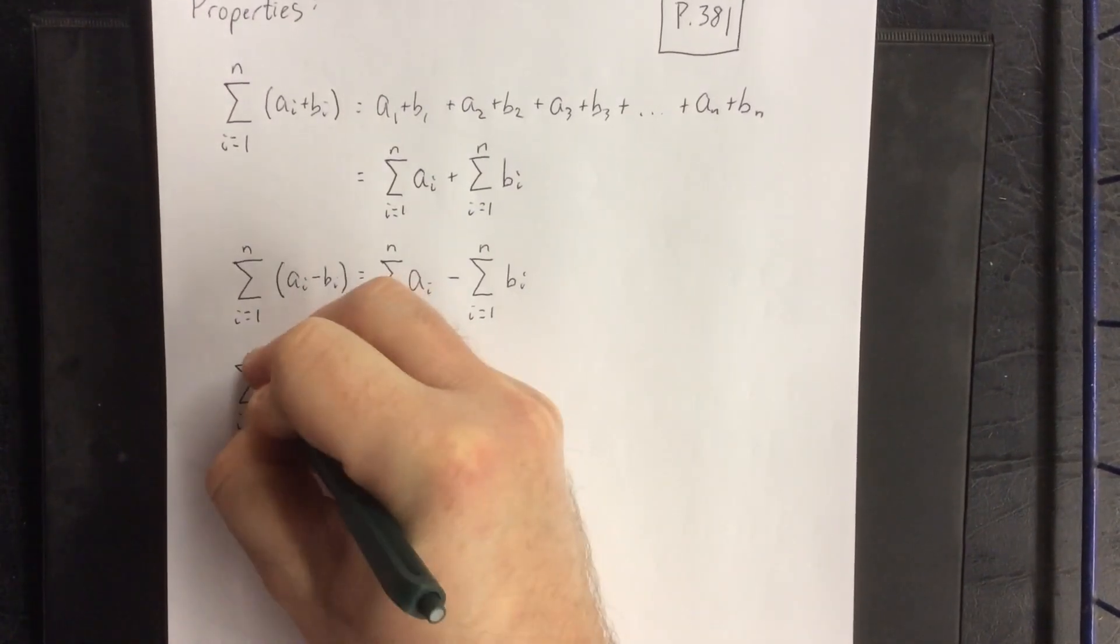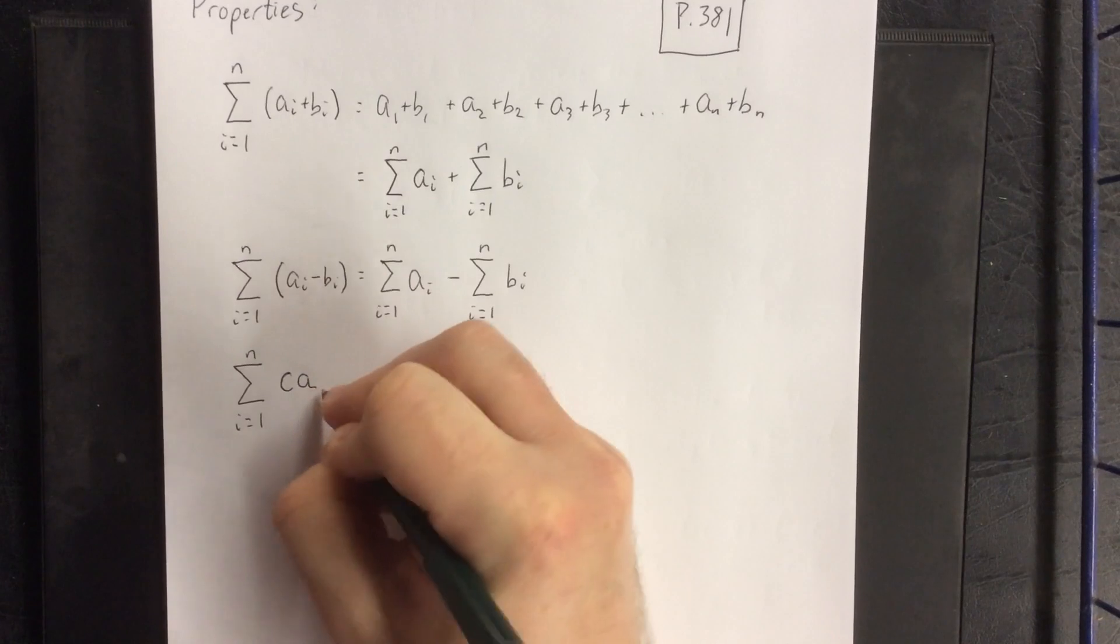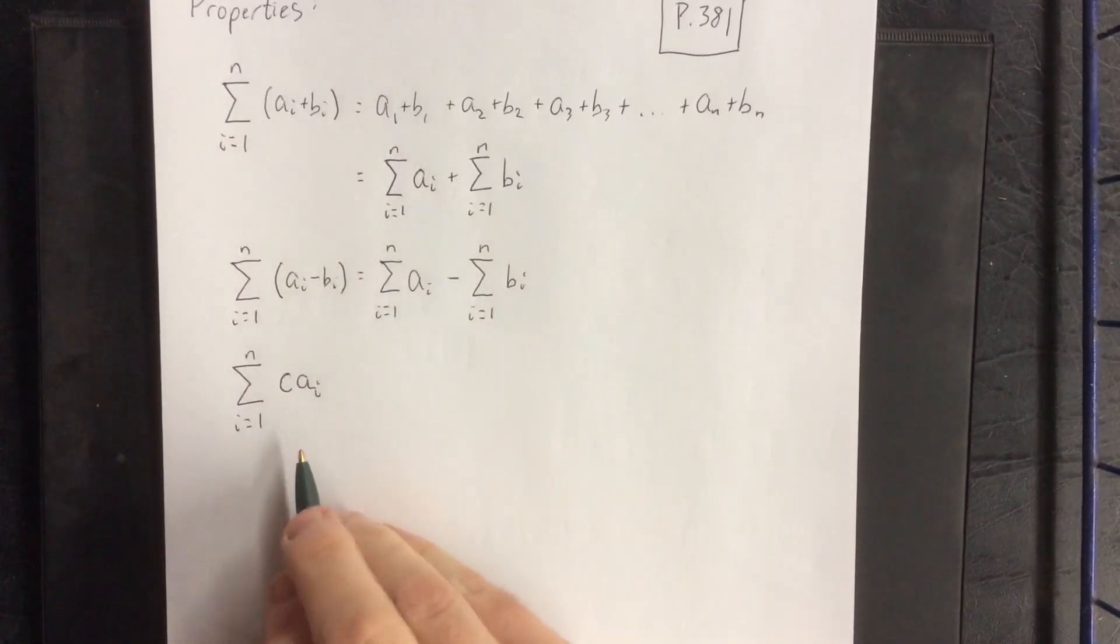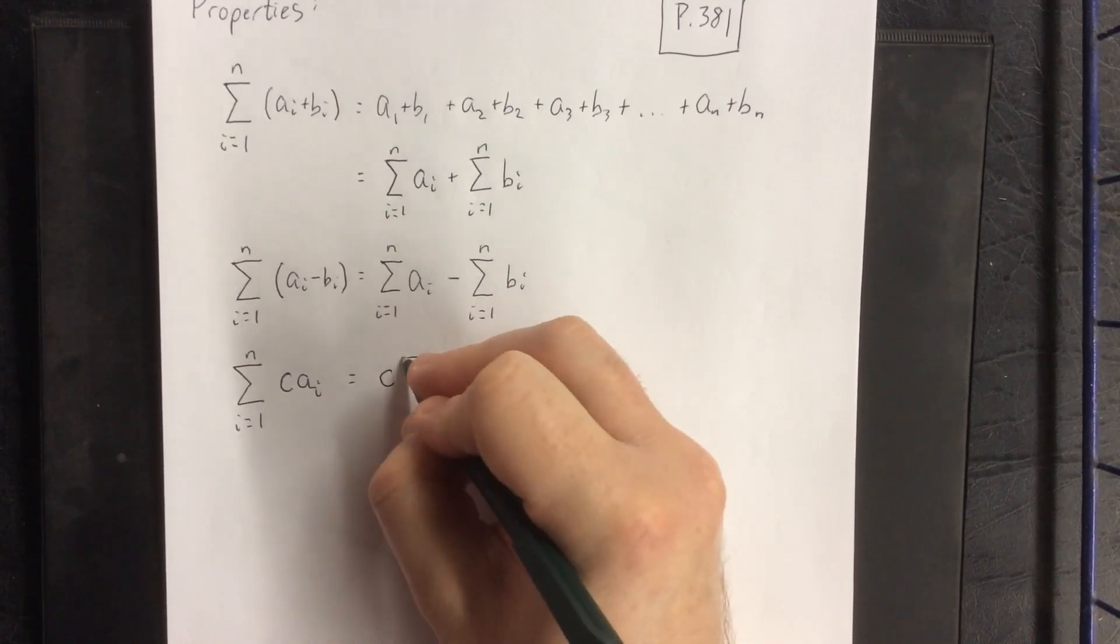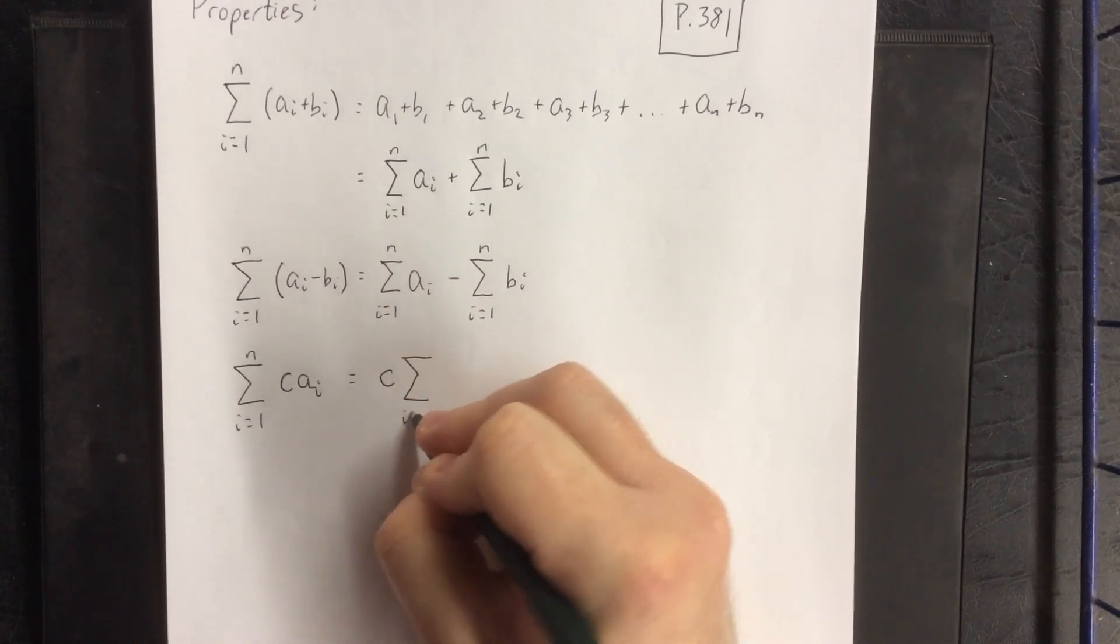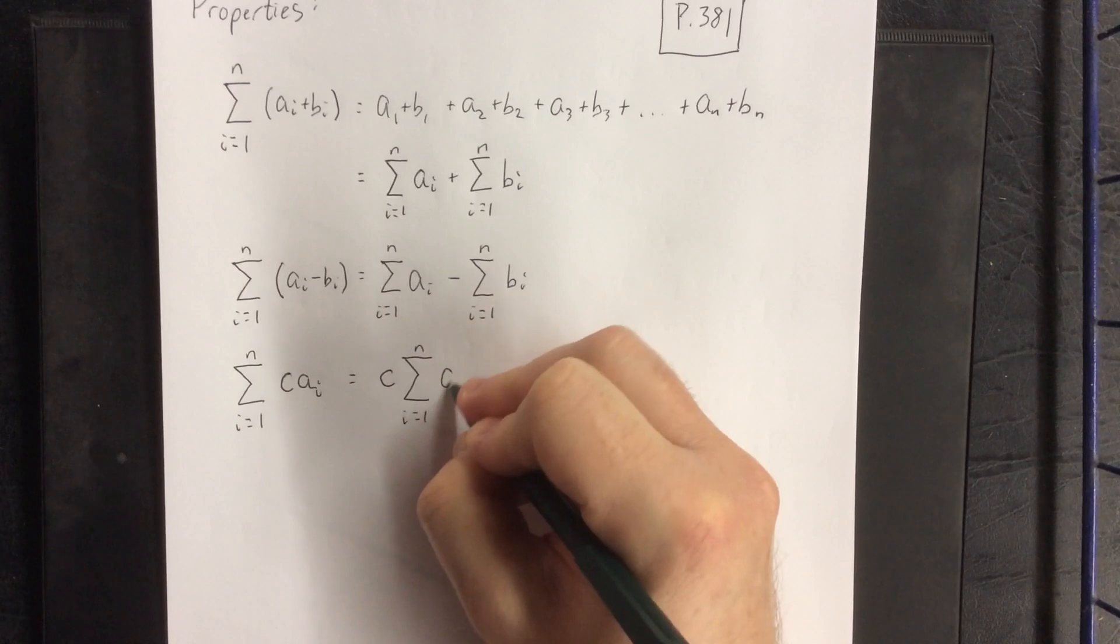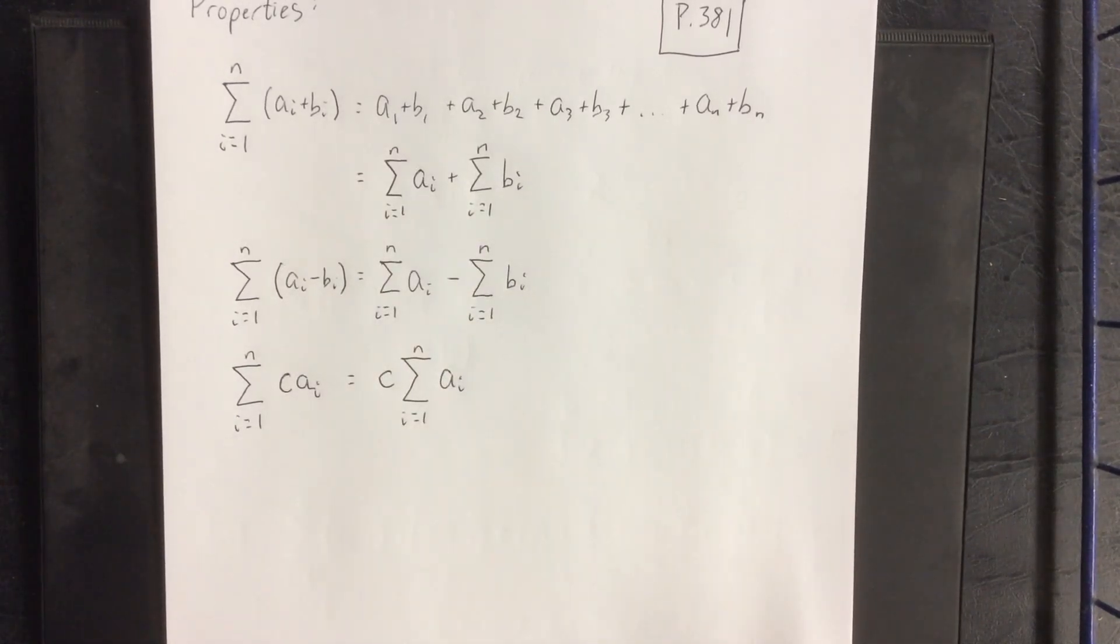Additionally, if I had a common factor for all of the terms, the common factor being just some constant, I can factor that constant out of the summation. Just like you would with a greatest common factor.